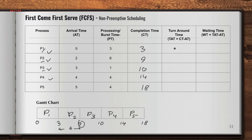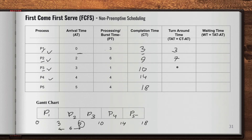The turnaround time equals completion time minus arrival time — meaning how long the process stayed in the system from when it arrived to when it completed. So: P1 = 3 − 0 = 3; P2 = 9 − 2 = 7; P3 = 10 − 3 = 7; P4 = 14 − 4 = 10; P5 = 18 − 5 = 13.